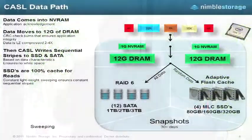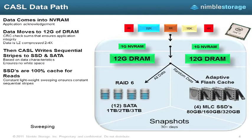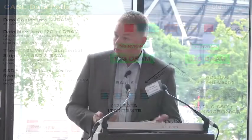We've developed a new file system that can take primary data, compress that data on the fly with no performance impact, store it in a compressed format within the array, and provide both sequential and random read and write performance from that array by use of a combination of storage at the disk layer and flash drives to act as an accelerator for reads.